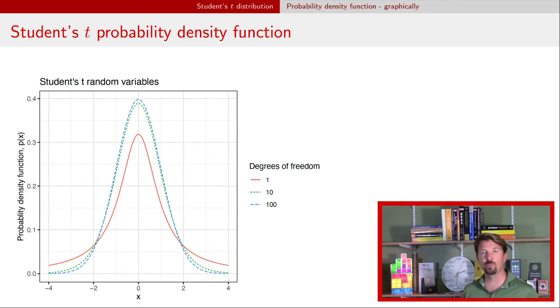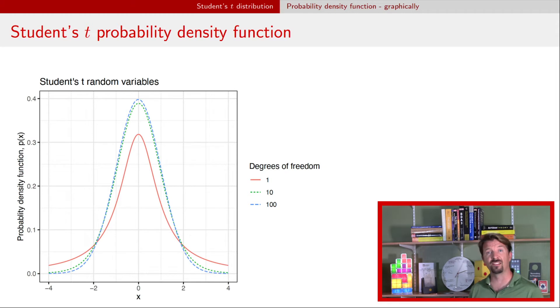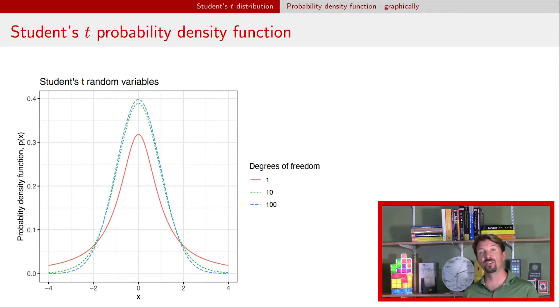The degree of freedom equal to 1 has a special name — it's called a Cauchy distribution, and a Cauchy distribution is known for having really heavy tails.